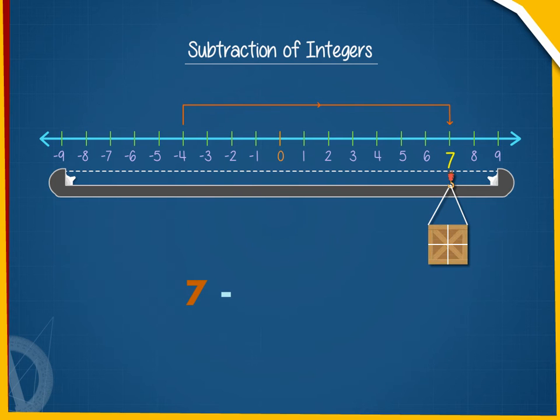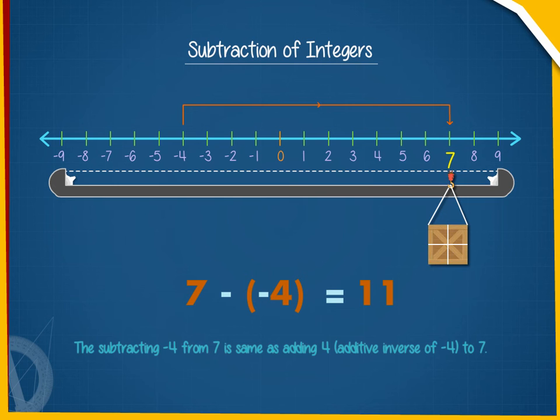Therefore, 7 minus minus 4 is equal to 11. We can see that subtracting minus 4 from 7 is same as adding 4, additive inverse of minus 4 to 7. In fact, every subtraction problem can be changed into an addition problem.